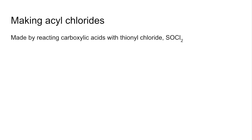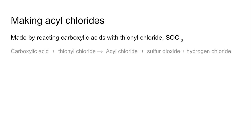How do we make acyl chlorides? Well, they're made by reacting carboxylic acids with something called thionyl chloride, which has the formula SOCl₂. There's the general equation: carboxylic acid plus thionyl chloride gives us the acyl chloride, sulphur dioxide gas, and hydrogen chloride gas. So you would see fumes of hydrogen chloride coming off this reaction.